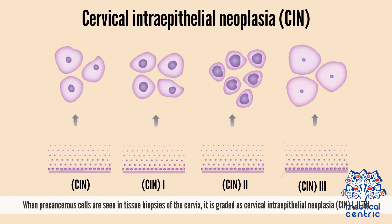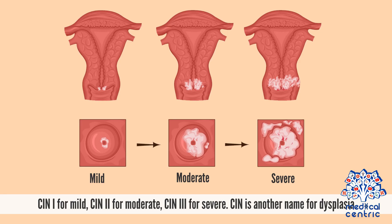When precancerous cells are seen in tissue biopsies of the cervix, it is graded as cervical intraepithelial neoplasia, or CIN, 1, 2, or 3. CIN-1 is for mild, CIN-2 for moderate, and CIN-3 for severe. CIN is another name for dysplasia.